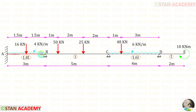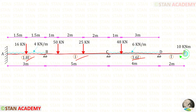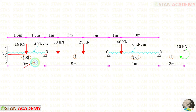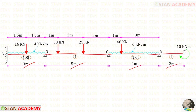The moment of inertia for AB is 1.8i, for BC it is i, for CD it is 1.6i, and for DE it is i. The length of AB is 3m, length of BC is 5m, length of CD is 4m, and the overhanging portion is 2m.